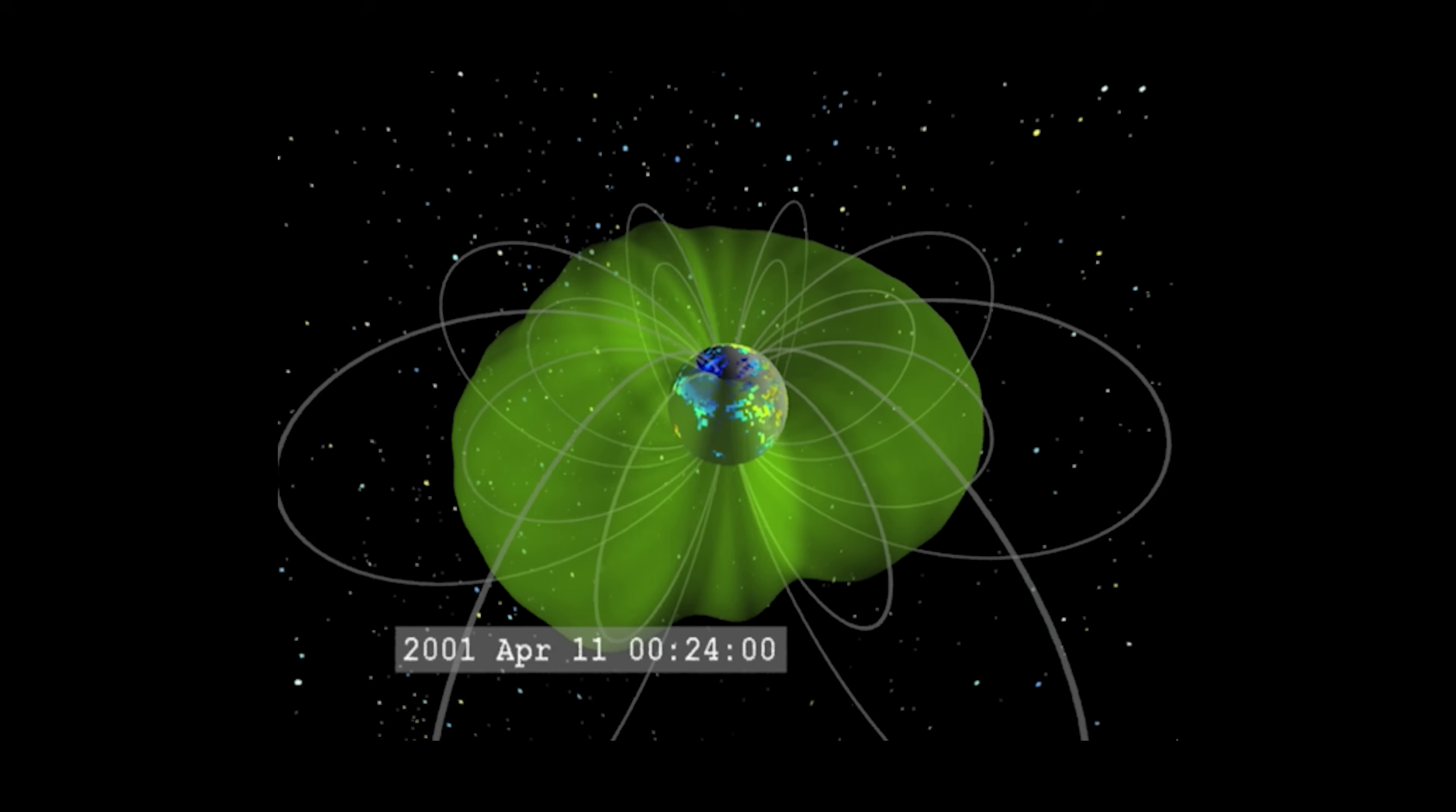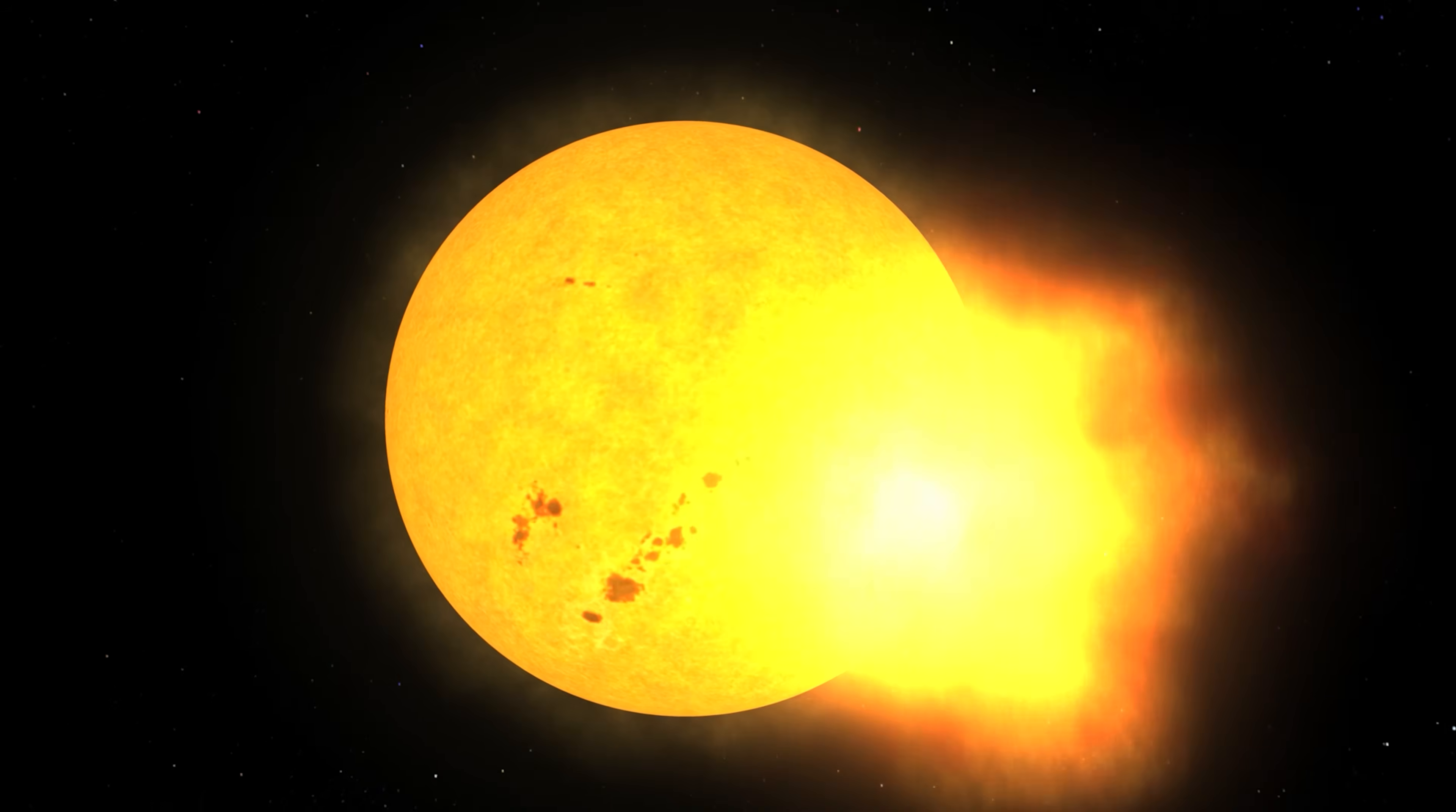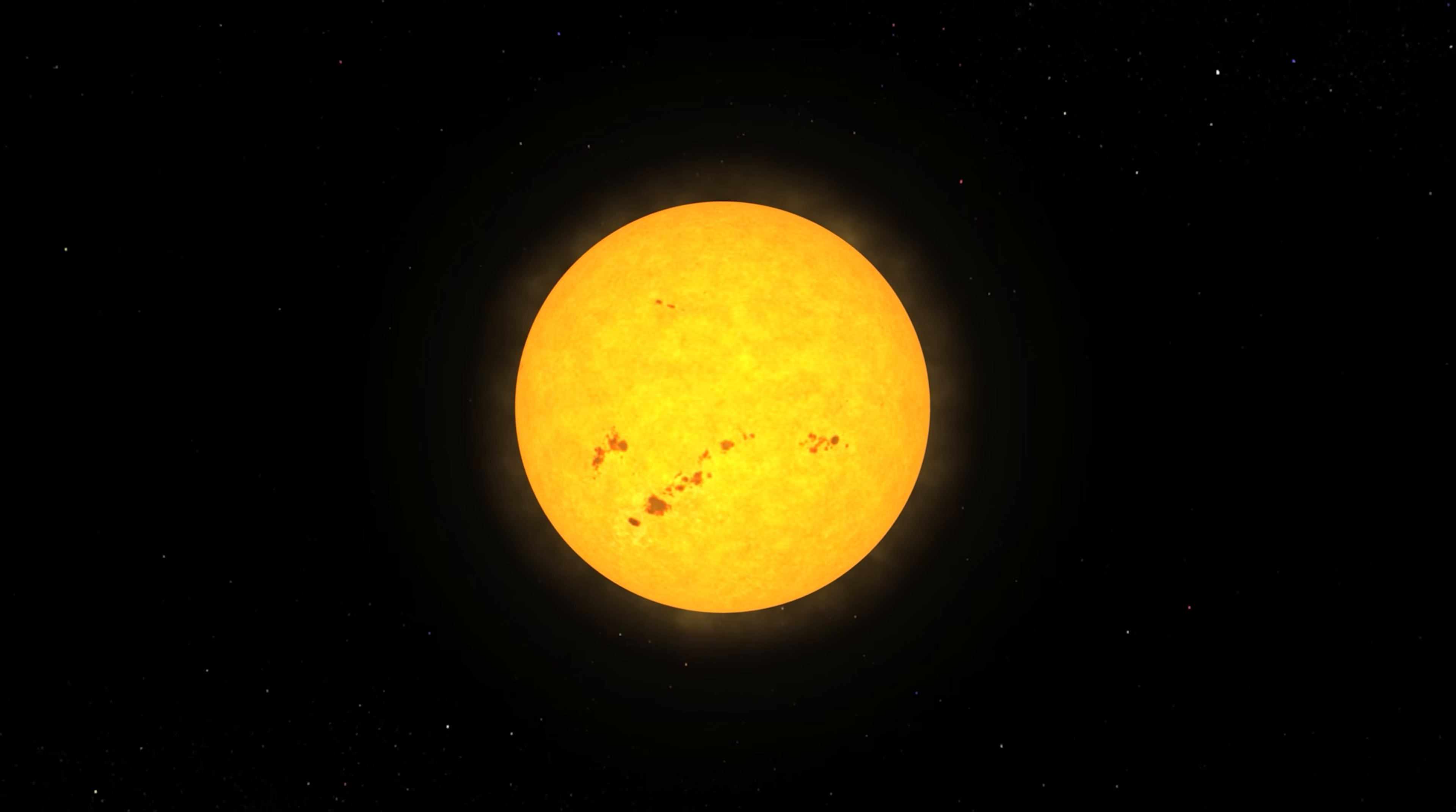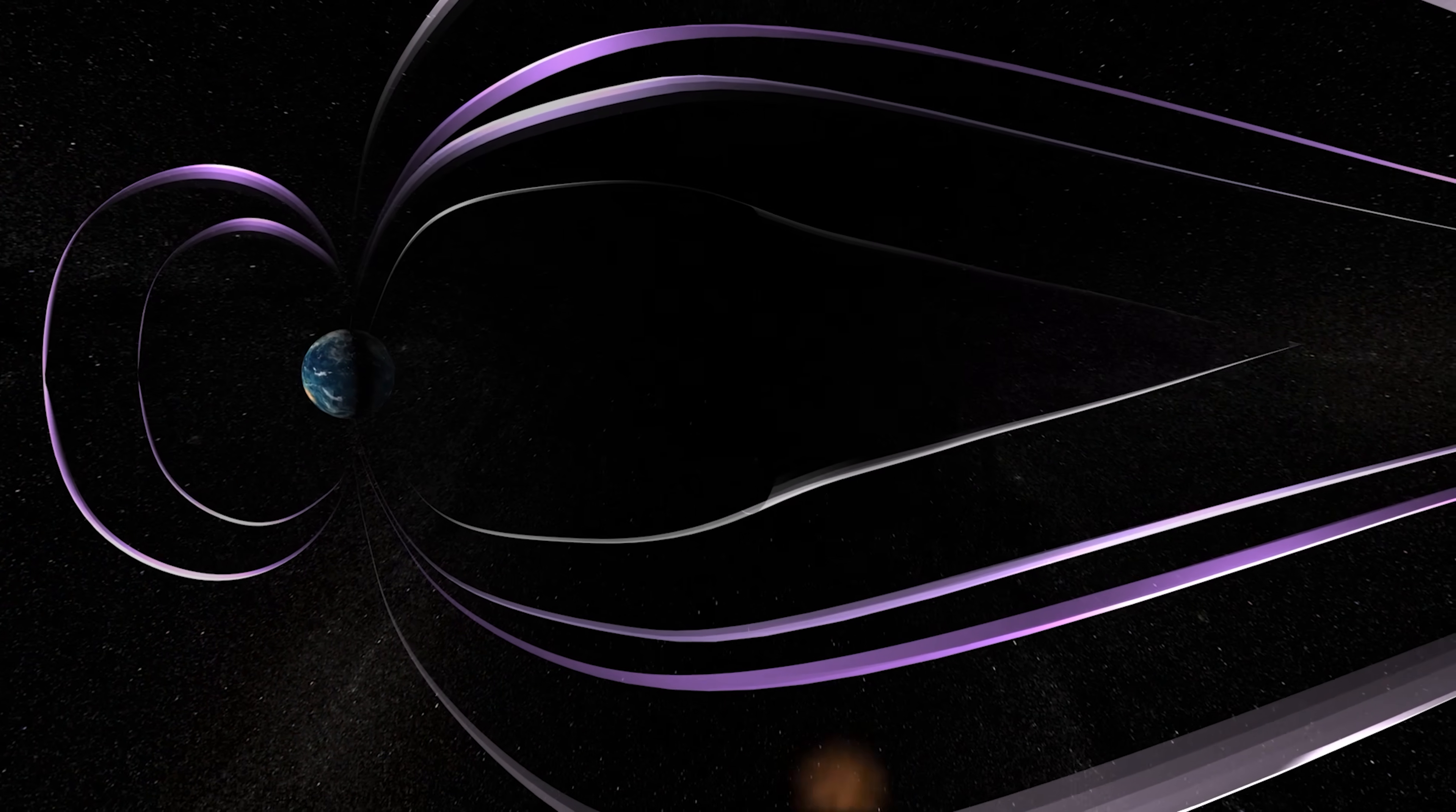When these billion-ton clouds of magnetized plasma slam into Earth's magnetic field just right, they can cause what is known as a geomagnetic storm. When the CME's magnetic field is southward pointing and the Earth's magnetic field is northward pointing, they can lock together like two magnets snapping together. This is a process called magnetic reconnection.